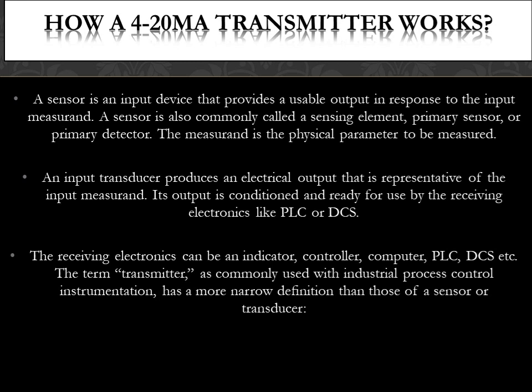How a 4-20mA Transmitter Works. A sensor is an input device that provides a usable output in response to the input measurand. A sensor is also commonly called a sensing element, primary sensor, or primary detector. The measurand is the physical parameter to be measured. An input transducer produces an electrical output that is representative of the input measurand.